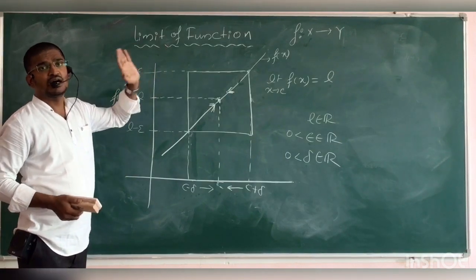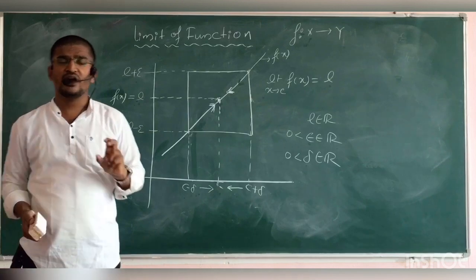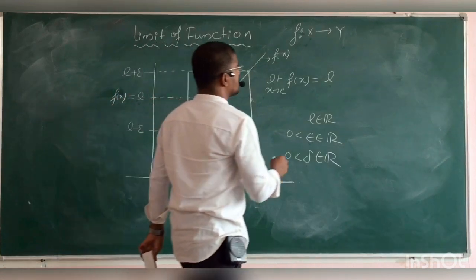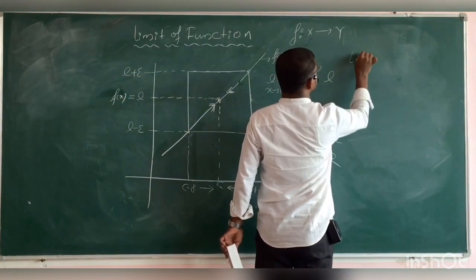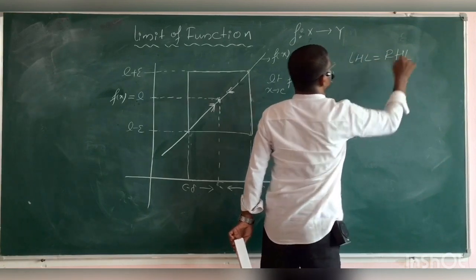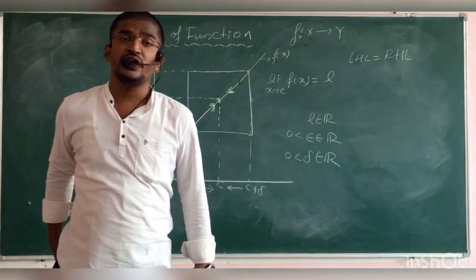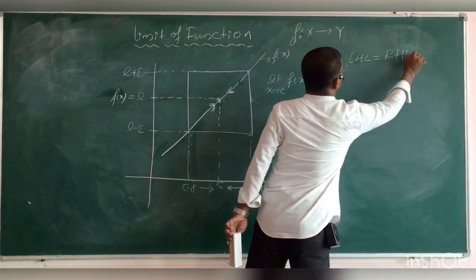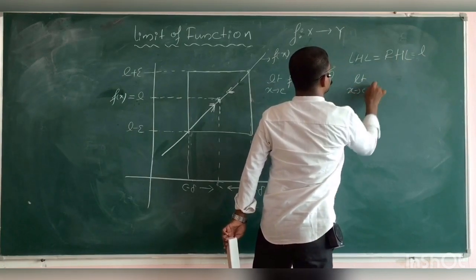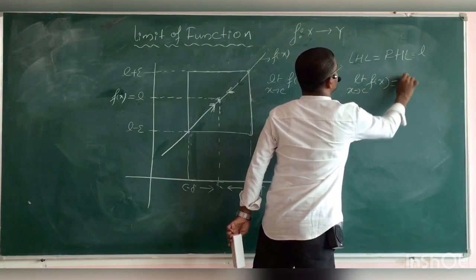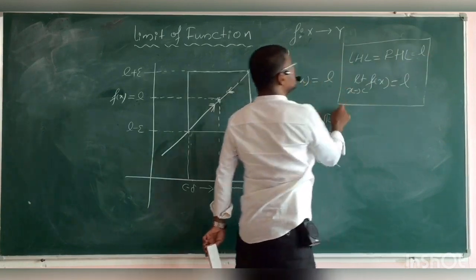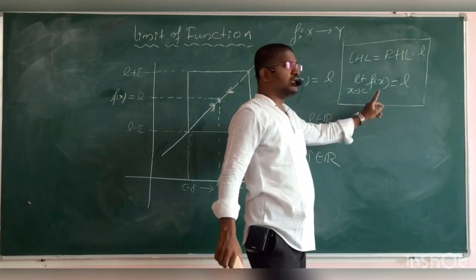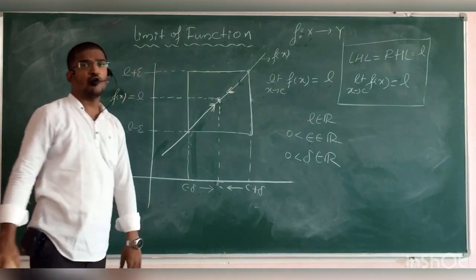I think this limit of a function is clear to you. This is the formal way of explaining limit of a function. The informal way is nothing but: you find your left hand limit and you find your right hand limit. If those two terms are going to be equal, then limit as X tends to C, F of X is going to be that limit — that is your informal way.